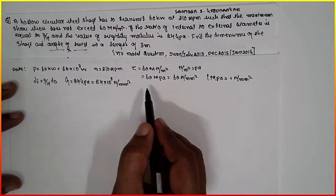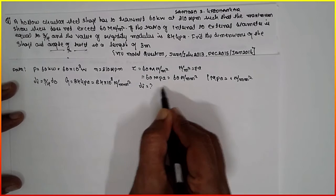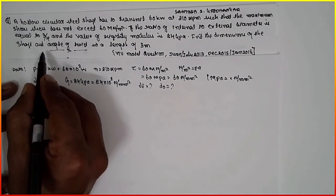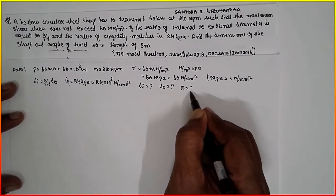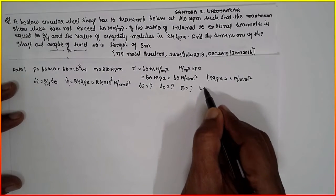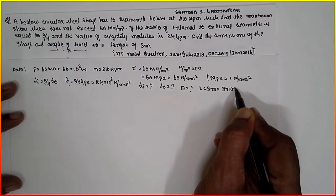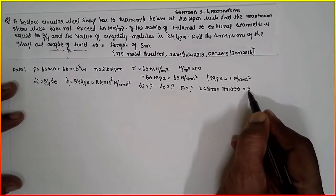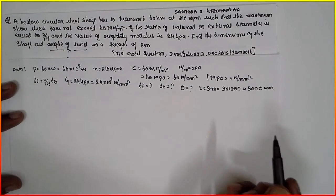Find the dimensions. We have to find out the dimensions, that is Di and D0. Find dimension of the shaft and angle of twist theta. The length is L equal to 3 meter, that means 3 times 1000, which is 3000 mm.